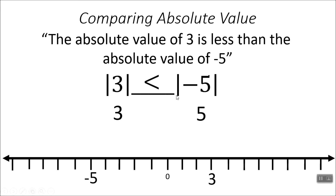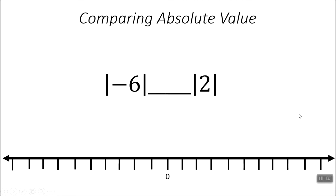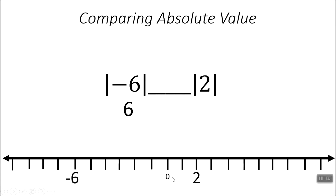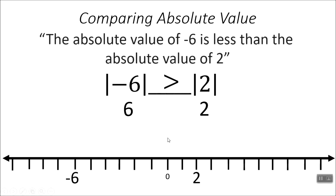Now if the bars weren't there, it would be a greater than symbol — it would be the other way. But since we're talking about their distances from 0, it's a whole different story. So we have absolute value of negative 6 and absolute value of 2. I'm going to mark negative 6 and 2. Negative 6's distance from 0 is 6; 2's distance from 0 is 2. 6 compared to 2 is going to be greater. So the absolute value of negative 6 is less than the absolute value of 2.